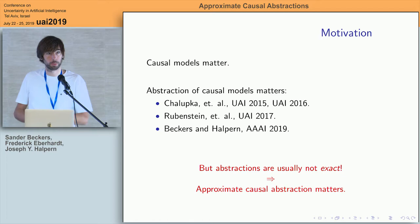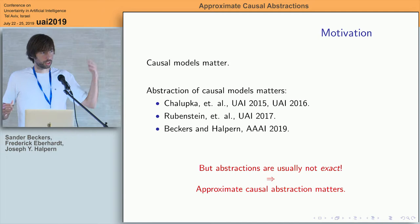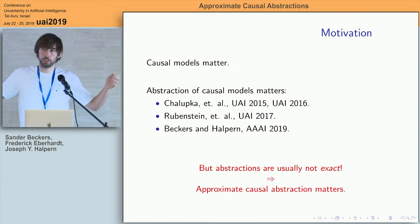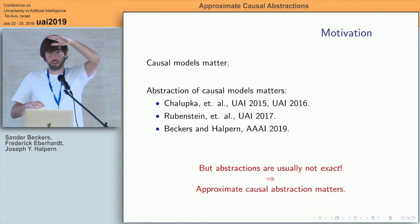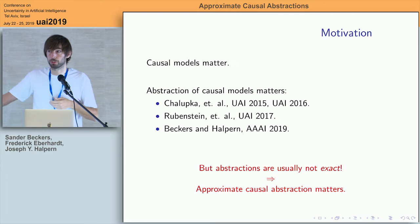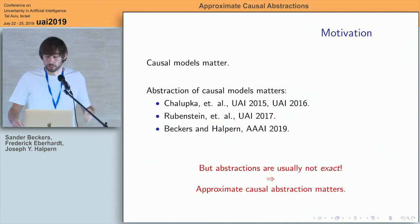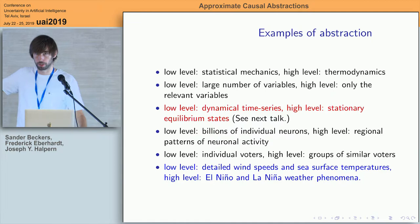If you're on board with the assumption that causal models and abstractions matter, it's quite a trivial observation that in reality, most abstractions will not be exact — the high-level model will not be an exact representation of the low-level one. You're obviously losing information, but beyond that, the inferences you make will only approximately give you the outcomes you'd see in reality. So there's an approximation going on, and therefore it's quite sensible to move on to approximate abstraction. Here's a bunch of examples to give you a sense of how broad this idea is.